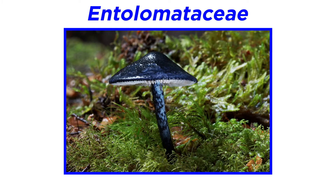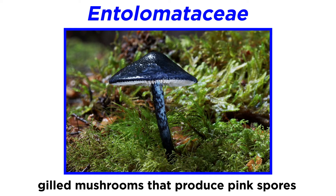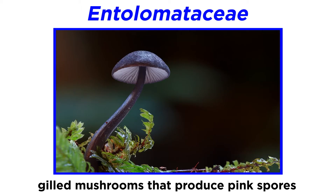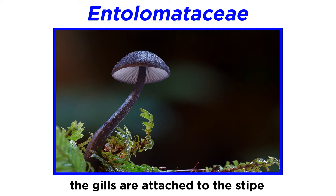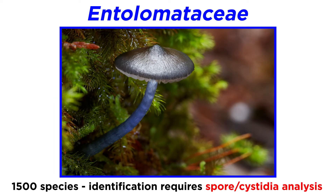Let us begin with the family Entolomataceae, a large and structurally variable family consisting of gilled mushrooms that produce pink spores. Often you can notice the pink hue of the spores along the gills or lamellae of the mushroom. These spores have unique structures with distinct ridges and pits depending on the genus. All mushrooms in the family have gills that are attached to the stipe. Considering the family has over 1,500 unique species, identification requires collections of the mushrooms and analysis of the spore shape and cystidia types.